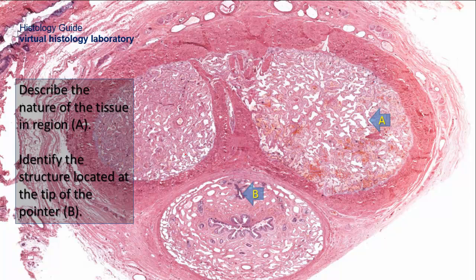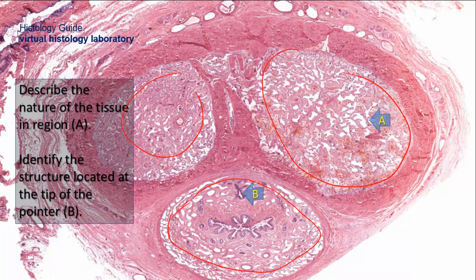Describe the nature of tissue in region A. This is a cross-section of the penis showing the corpus cavernosum and corpus spongiosum. These are bodies made of erectile tissue — cavernous and spongy tissue. You can see multiple vascular sinuses with trabeculae of connective tissue in between. These fill with blood during erection. The corpus spongiosum also contains paraurethral glands that secrete mucus; their ducts open into the urethra.